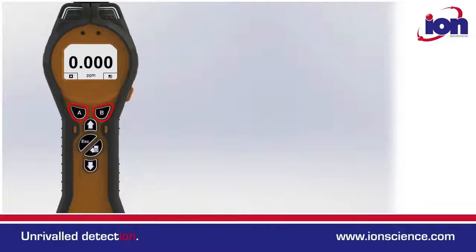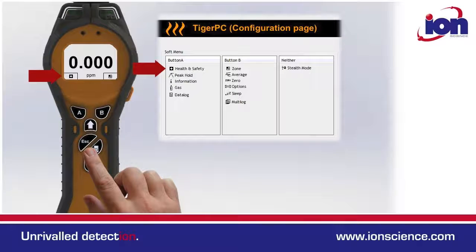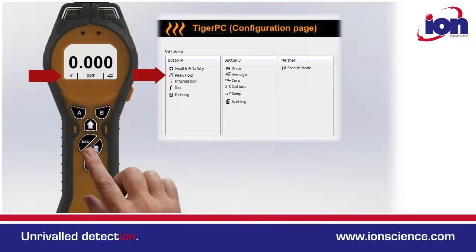You may have noticed there are two more keys. These soft keys do no more than select the functions directly above them on the display. Functions can be dragged and dropped into a specific order within the Tiger PC software package. However you arrange them in Tiger PC is how they appear on your instrument.